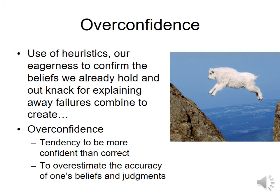One big problem with heuristics is that we may become overconfident. If a rule has worked in the past, we assume it must work now. With overconfidence, our tendency to be confident in our correctness may overshadow any errors in our estimation. We overestimate the accuracy of our beliefs and judgments — we've all walked away from a test feeling we got an A, then got the test back and discovered we were more confident than we were correct.